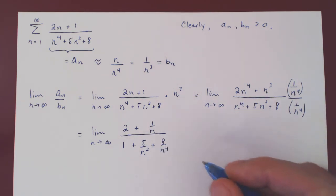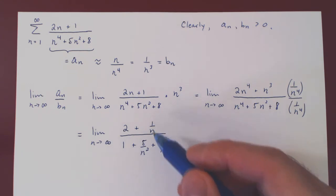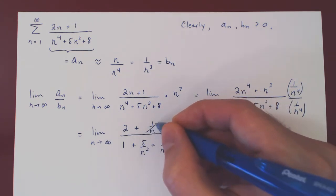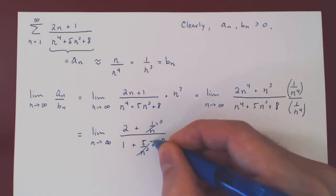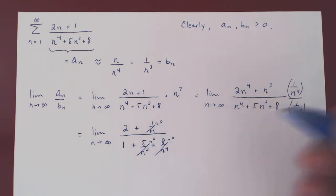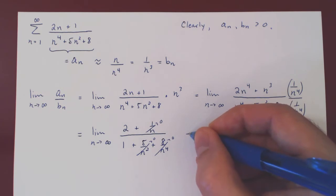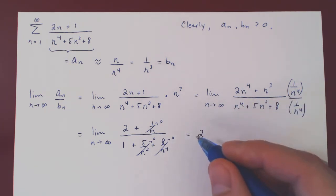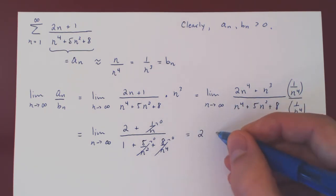And now the limit should be very apparent. As N goes to infinity, 1 over N, 5 over N squared, 8 over N to the 4, all shrink to 0. And we're left with 2 over 1, which is simply 2. And we don't care that the value is 2, but that it is positive.